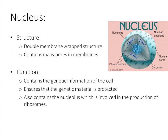What better place to start than the nucleus? The nucleus is going to be familiar to most of you. Structurally, our nucleus is composed of a double membrane-wrapped structure — we can see this from the diagram, often depicted in purple, usually due to staining when viewed through microscopes. It contains pores here, these nuclear pores. Functionally, the nucleus contains genetic information. We've got chromosomes that contain DNA or genetic information in other species.